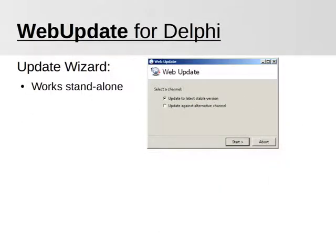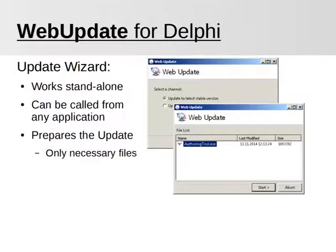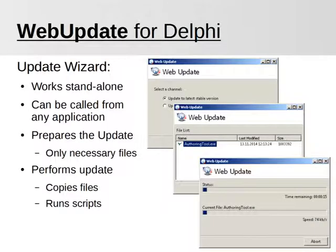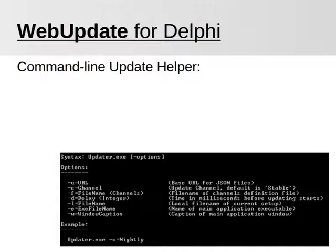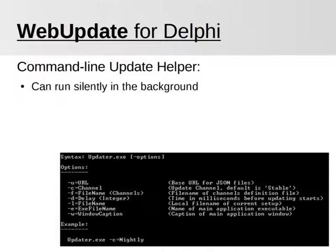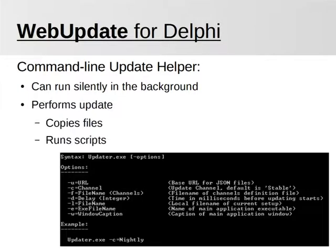Now let's have a look at the Update Wizard. This tool can be used for a dual purpose: as a callable update helper or as a standalone tool. Once a channel has been selected, a list of files is built. This list only contains files that need to be validated or updated, and can be modified using DWS scripts. Once it is complete, the update is actually performed. A process dialog informs the user about the current state of the update, and at any time it is possible to abort the update process. In addition to the graphical update wizard, a Command Line Update Helper is available, meant to perform the update silently and automatically in the background. It does exactly the same as the wizard.